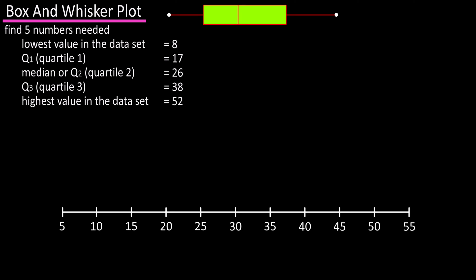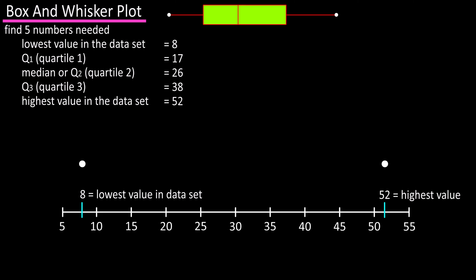So now, slightly above the axis, we're going to draw the graph. First, find the lowest value in the data set — 8 — on the axis, go up, and put a dot there. Now do the same for the highest value, 52, and put a dot there. If you're drawing this by hand, try to make sure that these dots are at the same level to keep the graph looking clean and balanced.